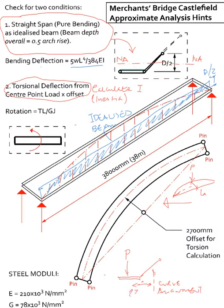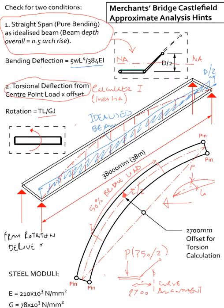The lever arm is 2.7m and P which is half the weight of the bridge is a dead load which was worked out to be 350kN, so that is 350kN divided by 2. We are given the steel modulus E = 210×10³ N/m² and G = 78×10³. For the torsion component we are going to work out the rotation and hence the deflection.